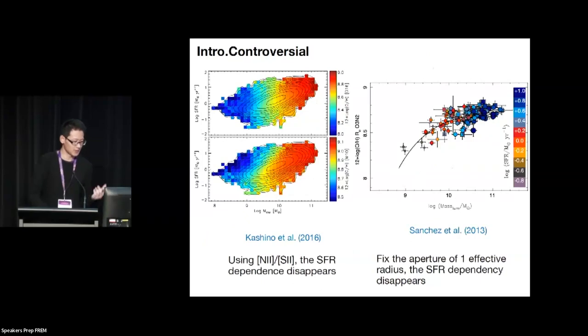For example, if we change the metallicity indicator, or we just choose a physical fixed aperture, for example the 1.85 radius, you can see that the dependence on the star formation rate just disappeared.